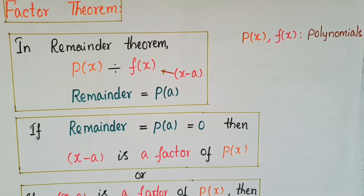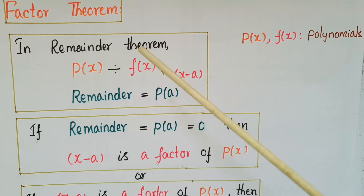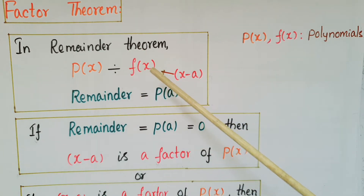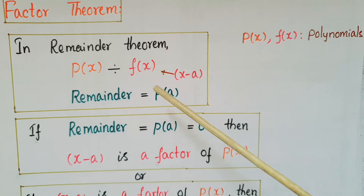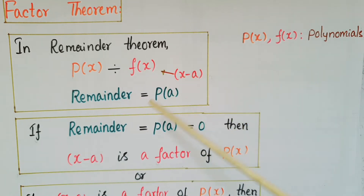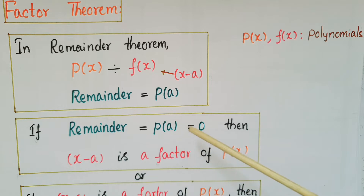Hello everyone, today I am going to tell about the Factor Theorem. We know that in the Remainder Theorem, if we divide a polynomial p(x) with another polynomial f(x), then the remainder is equal to p(a). So here f(x) is equal to x minus a, and the remainder can be 0, 1, 2, 3, 4, etc., any number.